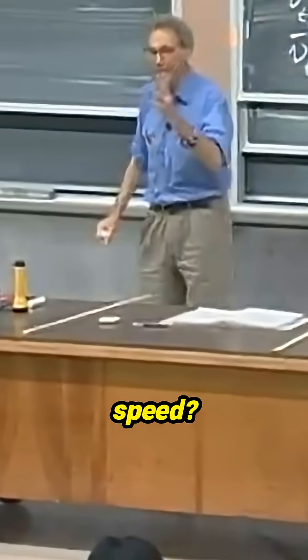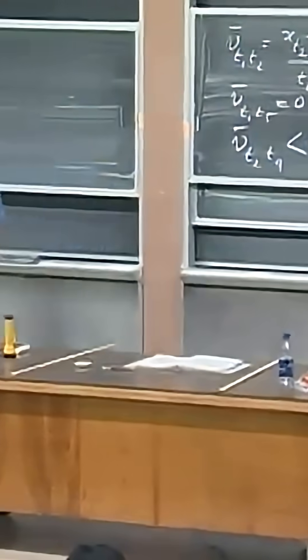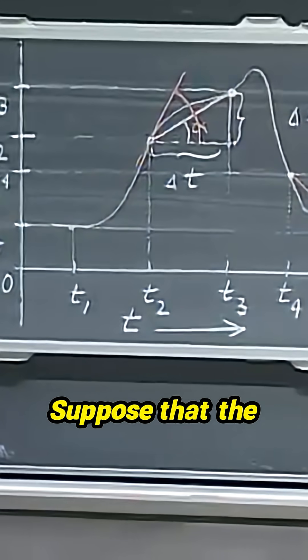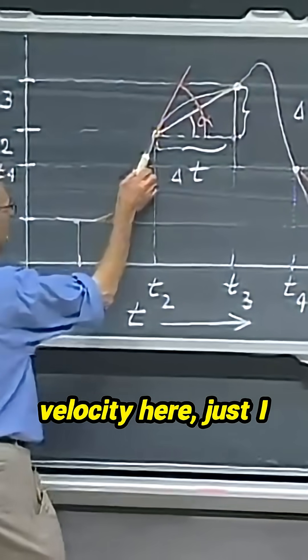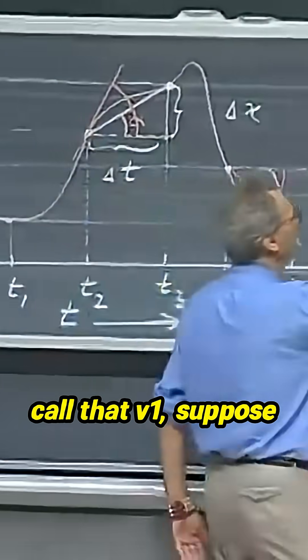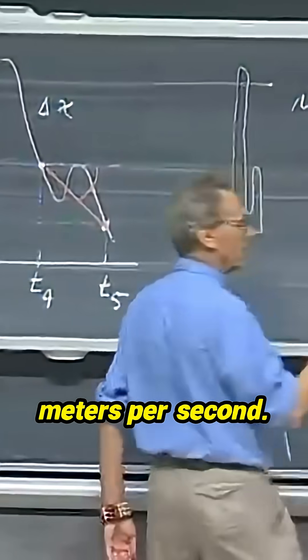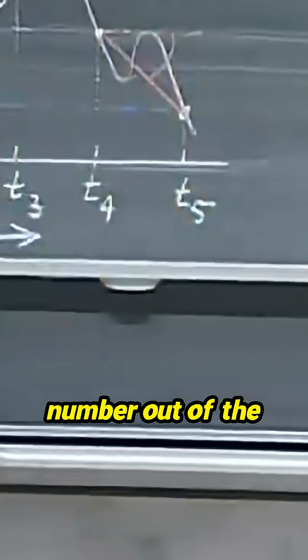What is the instantaneous speed? Well, speed is not sign-sensitive. Suppose that the velocity here, I call that v1, suppose that was plus 30 meters per second. I just grabbed this number out of the blue.